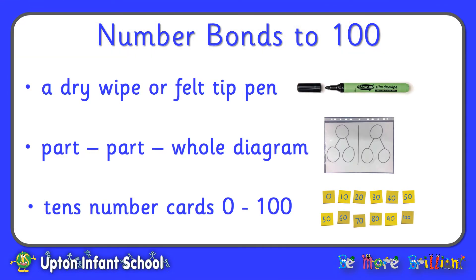So for this session we're going to need a dry wipe pen or a felt tip pen, a part-part-whole diagram, and I've made my own here by drawing two part-part-whole diagrams side by side on a piece of paper and putting them inside a poly pocket so that I can write on them and rub them out.